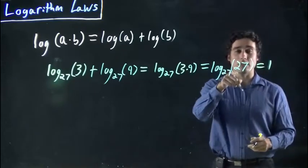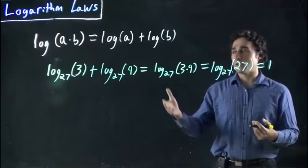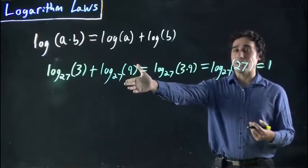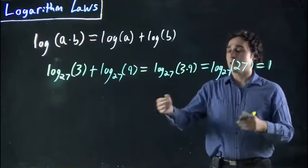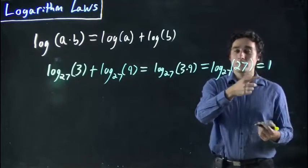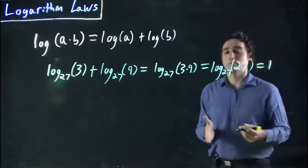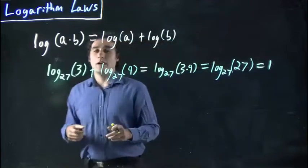This simply equals 1. Whereas if I didn't have a calculator that could punch into the base 27, or even if I did, I'm going to punch it in and eventually get this answer. Well, this simplified it.